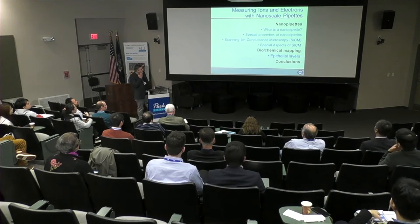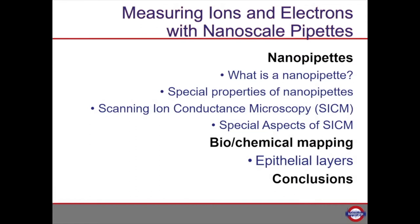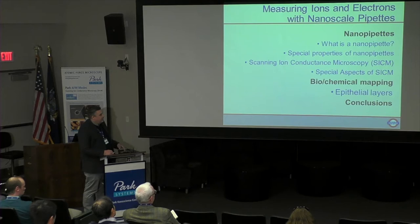Today I want to talk about - and I used a very general title because I wasn't sure what I was going to talk about - measuring ions and electrons with nanoscale pipettes. I'm going to walk you through the experiments that we do, a couple examples. I'll explain what nanopipettes are, what's special about them, and then how we incorporate those in scanning ion conductance microscopy. Then I'm going to talk about some special aspects of SICM and one of the larger projects in my group on biochemical mapping in cell monolayers.